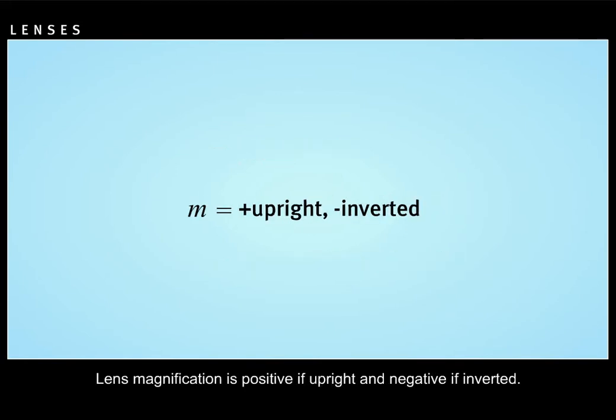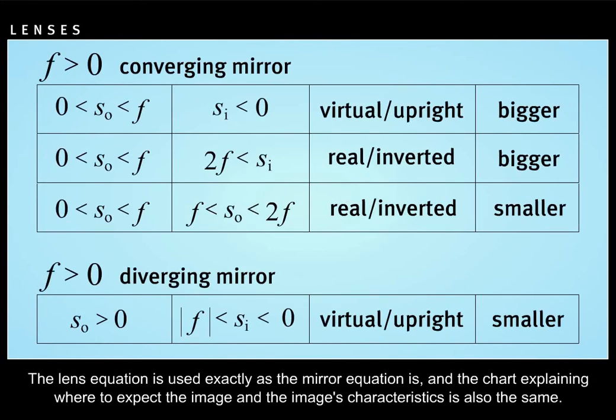Lens magnification is positive if upright and negative if inverted. The lens equation is used exactly as the mirror equation is, and a chart explaining where to expect the image and the image's characteristics is also the same.